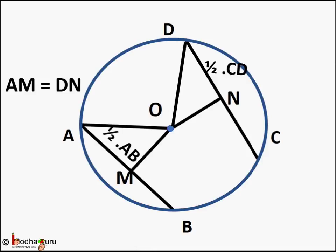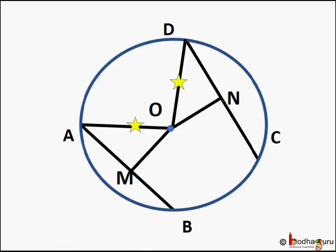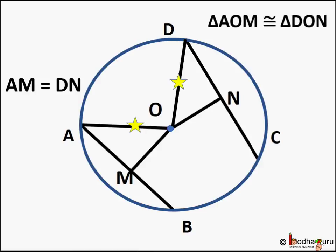Now we join OA and OD. Triangles AOM and DON are right-angled triangles, so we need to show the hypotenuse and one other side are equal. Hypotenuse OA and OD are equal as they are radii of the same circle, and AM is equal to DN as we just proved. So triangle AOM is congruent to triangle DON following the RHS rule.